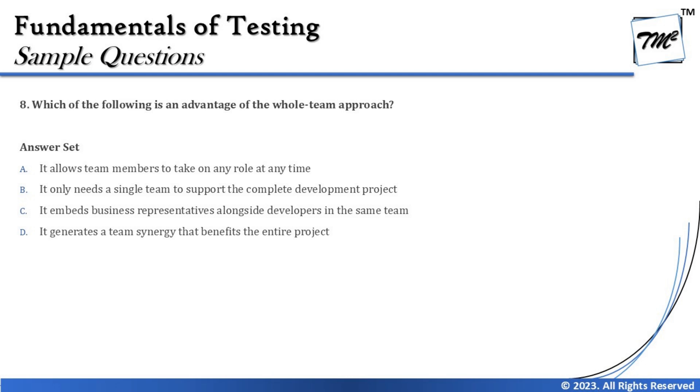Option B says it only needs a single team to support the complete development of a project. Not necessarily — there may be a performance testing team, security testing team, API team, or database team. The whole team approach means having representatives from different segments working together, but it does not mean there is only one team required. Multiple teams can contribute in different ways.